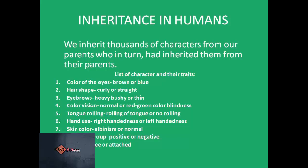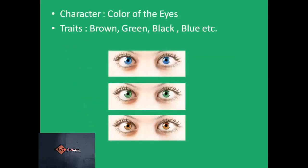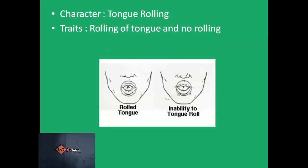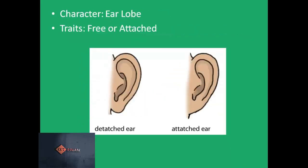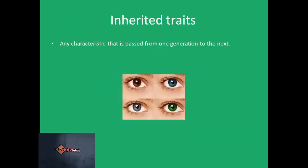If we discuss these two terms in relation to inheritance in humans, we inherit thousands of characters from our parents, who in turn had inherited them from their parents. Here is a list of characters and traits. Character: color of the eyes; traits: brown, green, black, blue, etc. Character: tongue rolling; traits: rolling of tongue and no rolling. Character: hand use; traits: right-handedness or left-handedness. Character: ear lobe; traits: free or attached.